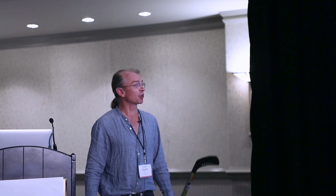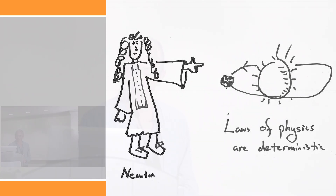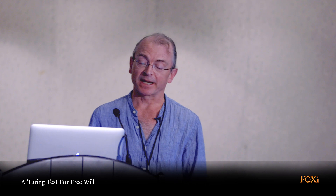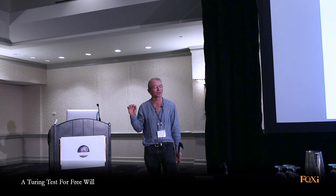Newton came up with his deterministic laws of motion, and for the subsequent 250-300 years people had a real problem with free will. Philosophers of the 18th century like Hume and Locke recognized this tension. Samuel Johnson said 'all theory is against the freedom of will, all experience for it.' I have an article in the Proceedings of the Royal Philosophical Society called 'A Turing Test for Free Will' — it's on the archive and has more quotes and history on this.